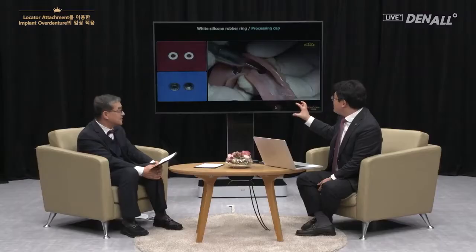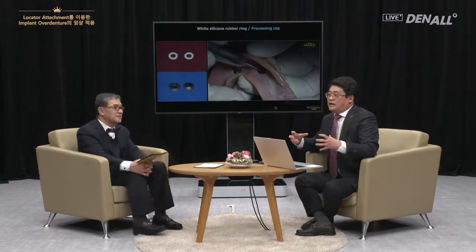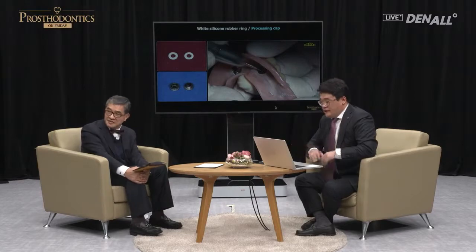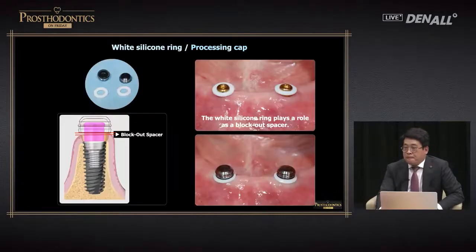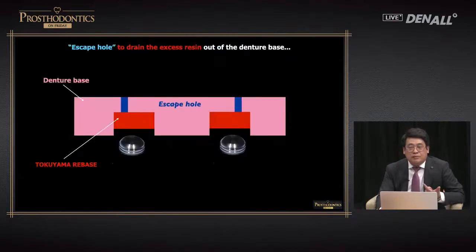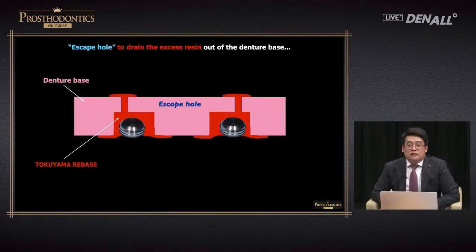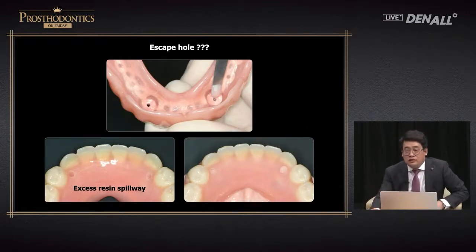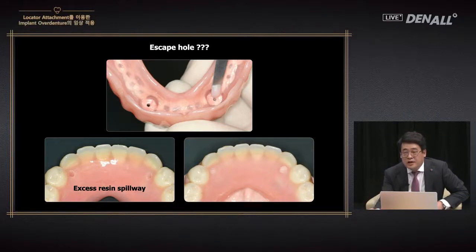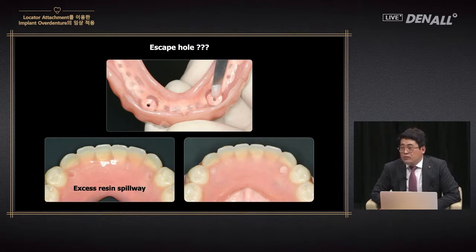Once the processing cap was adjusted and passive fit was gained, this is important before attaching the processing cap. When attaching the processing cap on the inner surface of the denture, you can form a vent hole on the outside surface, but personally I do not prefer this because micro-gaps form and food impaction can occur.